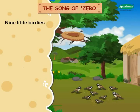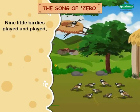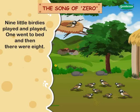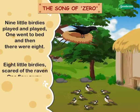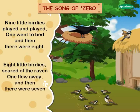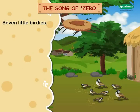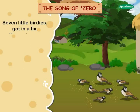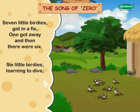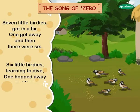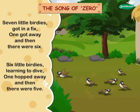Nine little birdies played and played. One went to bed and then there were eight. Eight little birdies scared of the raven. One flew away and then there were seven. Seven little birdies got in a fix. One got away and then there were six. Six little birdies learning to dive. One hopped away and then there were five.